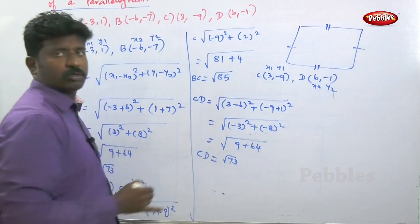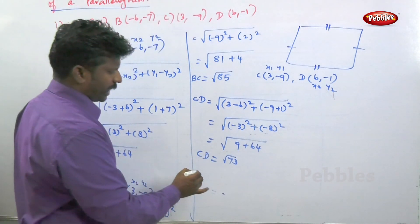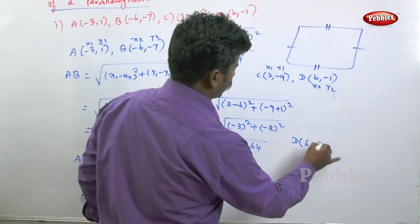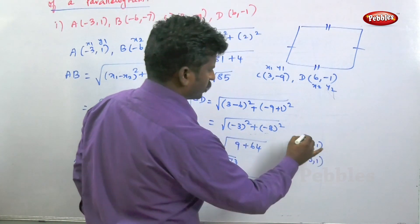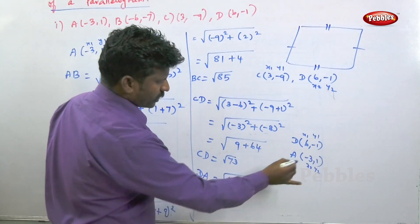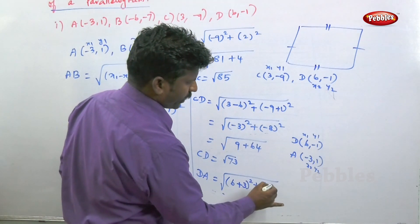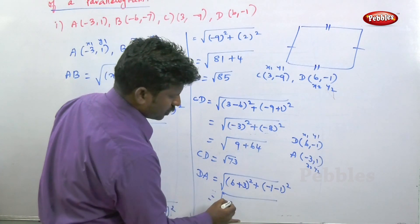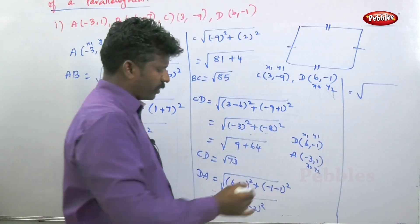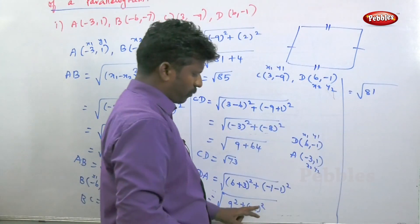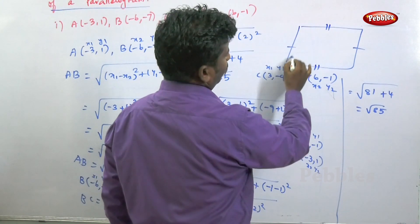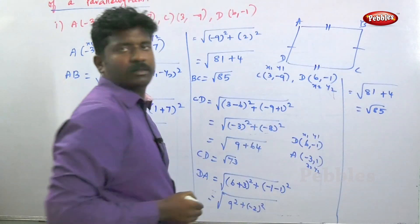That is root of 9 plus 64, equal to root 73. So CD is equal to root 73. Next, DA: D point is (6, -1) and A point is (-3, 1). DA is equal to root of (6 minus (-3)) whole square plus (-1 minus 1) whole square, which is root of 9 squared plus (-2) squared, giving root of 81 plus 4, equal to root 85.